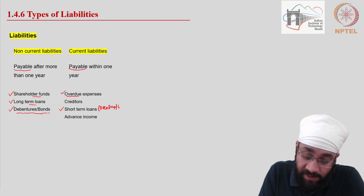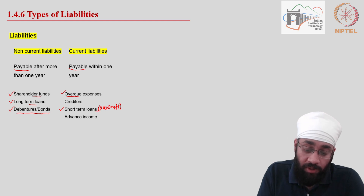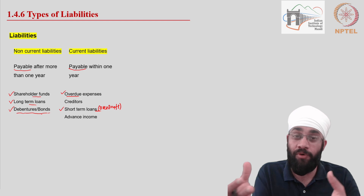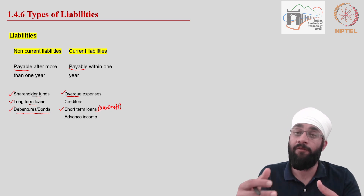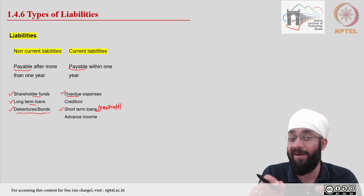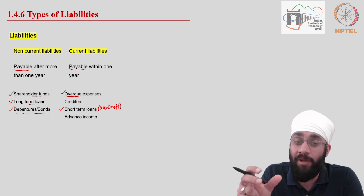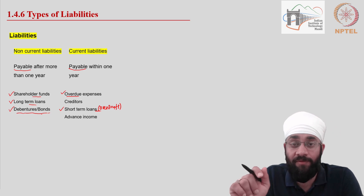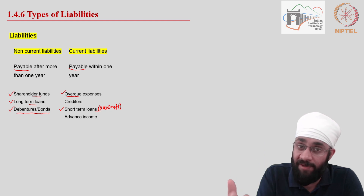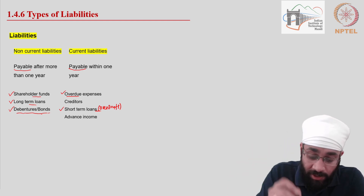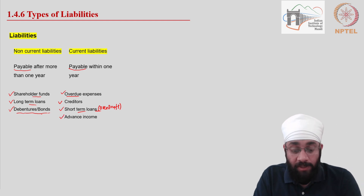You can take a short-term loan from the bank through a facility called overdraft. For businesses with a good reputation, the bank can extend a facility where if you have 10,000 rupees in your account, the bank will allow you to withdraw 20,000 rupees — meaning you will have a negative balance of 10,000 rupees. The bank may say you can bring this money back within one month; if you delay further, they will charge interest. Otherwise, this facility is free because the bank knows money regularly comes into your account. That is what overdraft is — a short-term liability.